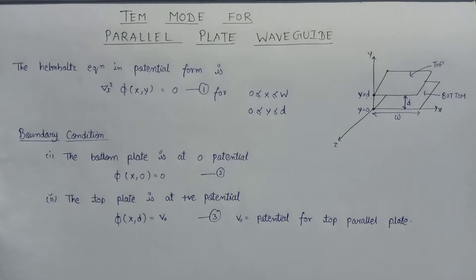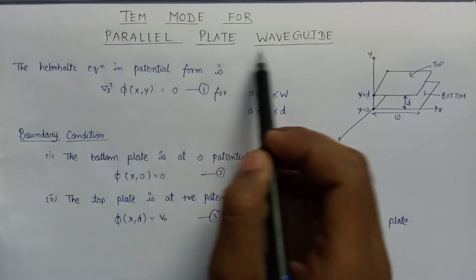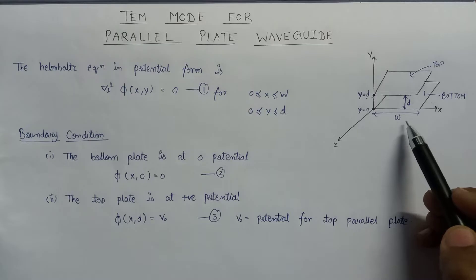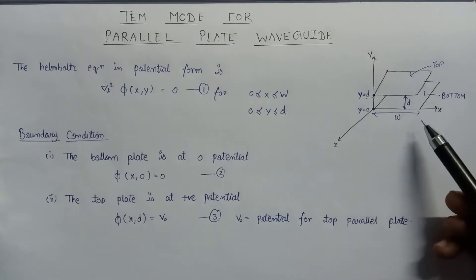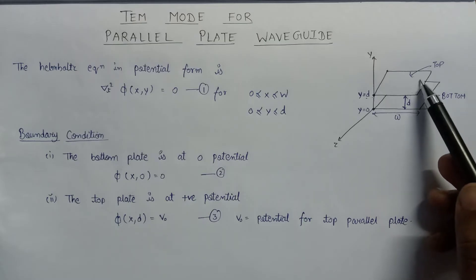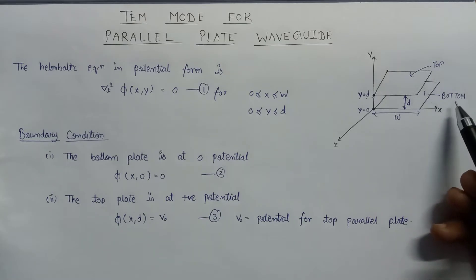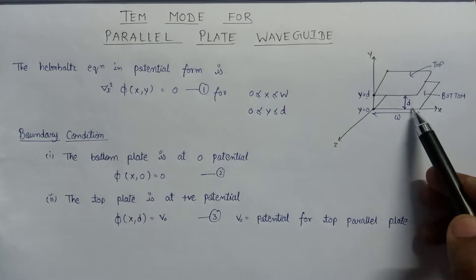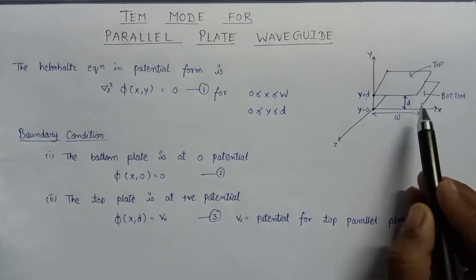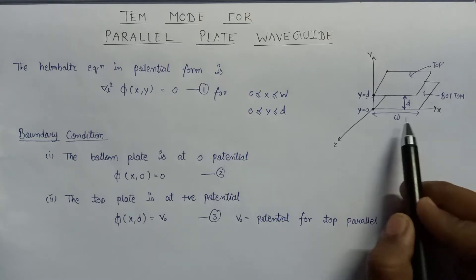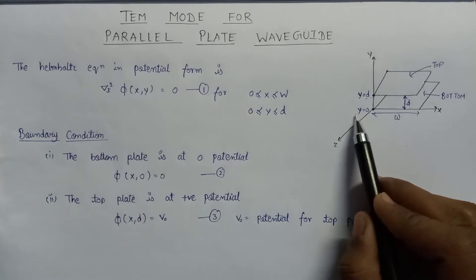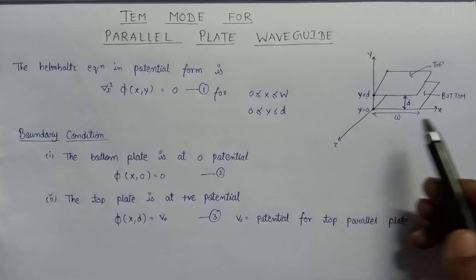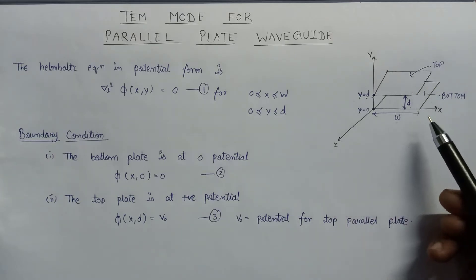Welcome. In this lecture we are going to study about TEM mode for parallel plate waveguide. This is the structure of the parallel plate waveguide that we discussed in our previous lecture. A parallel plate waveguide consists of two plates — one is the top plate and another is the bottom plate. These two plates are parallel to each other, separated by a distance equal to D. The width of both plates is equal to W. The bottom plate is placed at y equals zero and the top plate is placed at y equals D. These two plates are also separated by a dielectric material.